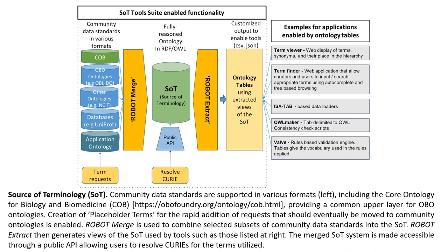We extend external ontology resources to meet the needs of immunologists. For example, SARS-CoV-2 is found in NCBI taxonomy, but the many variants of SARS-CoV-2 are not, and these variants are critical for our curators to capture. When we need terms not yet present in existing resources, we add temporary terms managed using our Source of Terminology (SOT) system, developed to manage many changing external ontologies. With the SOT, we take in many community standards, provide immunology-friendly term labels, manage custom term requests, and handle versioning. Interoperability is facilitated by a public API allowing users to resolve queries for the terms we use.